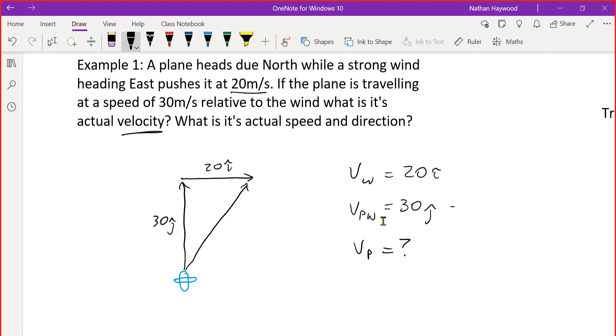You can also write it as V, P, R, E, L, W. So you may remember, because I just gave it to you, V_P is V_PW plus V_W. So that was the rule I just gave you. So the velocity of the plane is equal to the velocity of the plane relative to the wind, plus the velocity of the wind. So it's 30J plus 20i. Done. So we found the actual velocity.